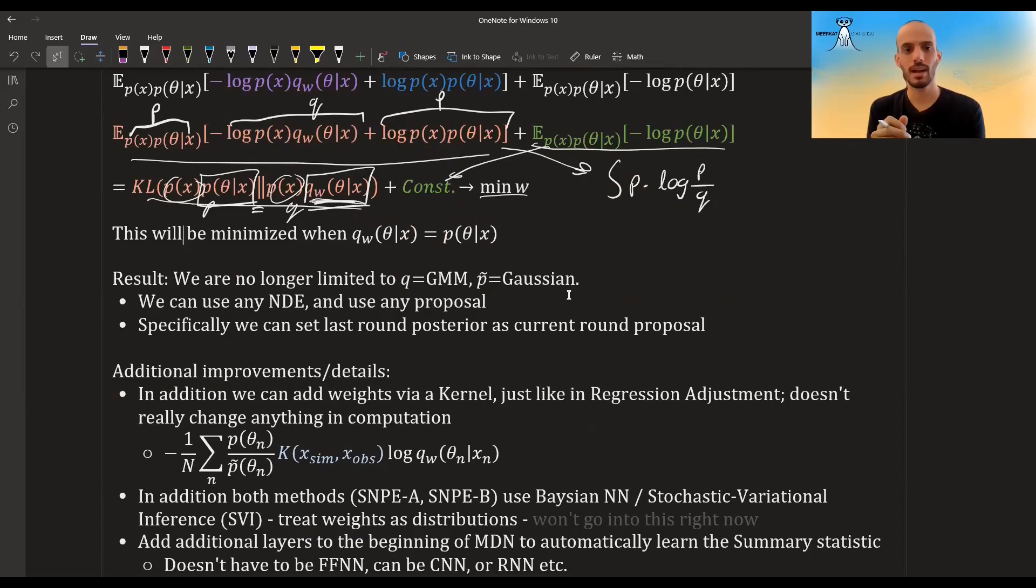So using these weights—these correction weights—in the loss really circumvents the entire problem, and we no longer have to limit ourselves to a Gaussian mixture model or to a Gaussian prior. We can use any NDE that we want and any proposal that we want.